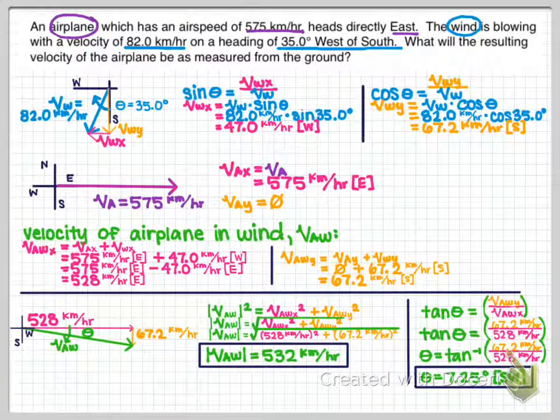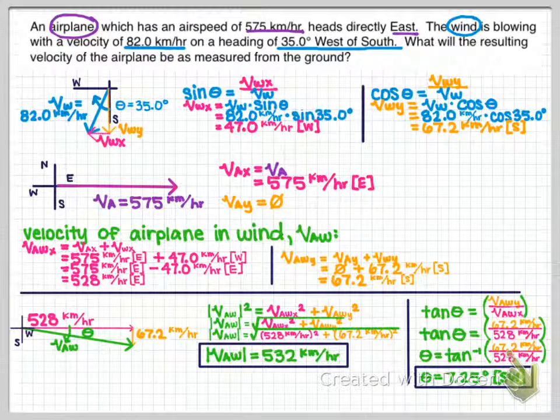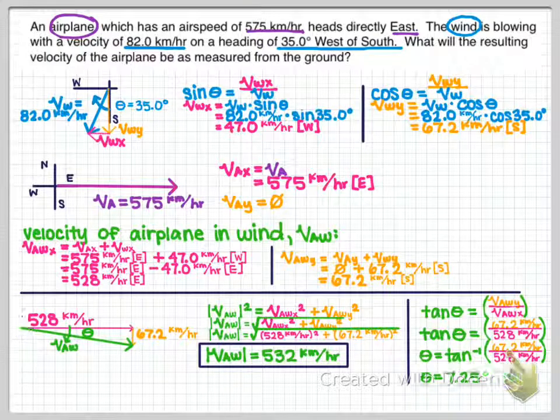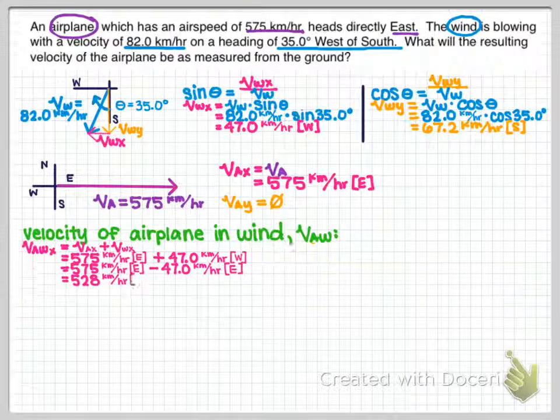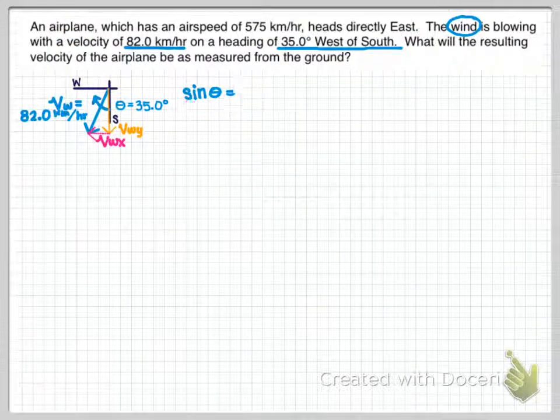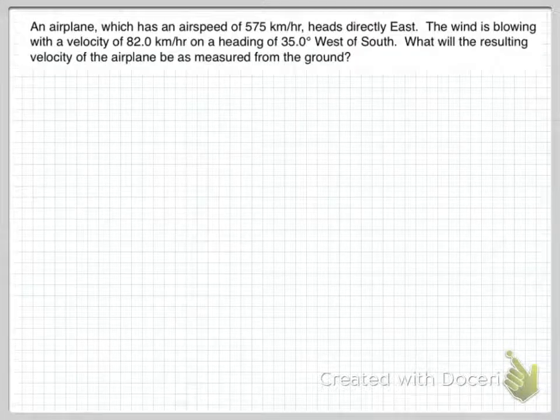Okay, so this is what we're going to work on. It's a relative motion problem — this is kind of all the work here. Let's back all that up and see what we have to do in order to get there. We're going to start by reading the problem.